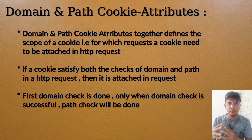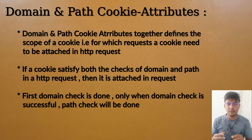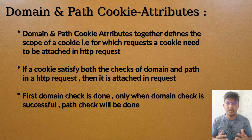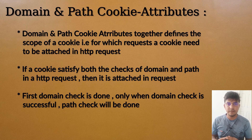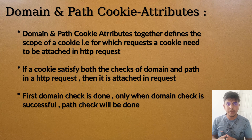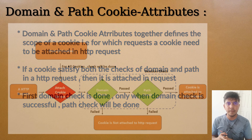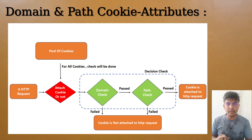How does the browser know that for this particular request it needs to attach this cookie, or for some other request it needs to attach some other cookie? This decision by the browser — whether to attach a certain cookie in a request or not — is defined by the domain and path cookie attributes together.